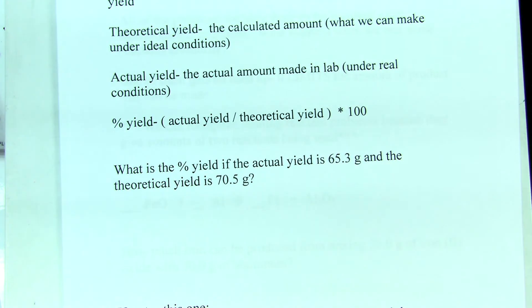So the percent yield can be calculated as the actual yield divided by the theoretical yield times 100. Here's a typical problem you might see that involves a percent yield: What is the percent yield if the actual yield is 65.3 grams and the theoretical is 70.5?